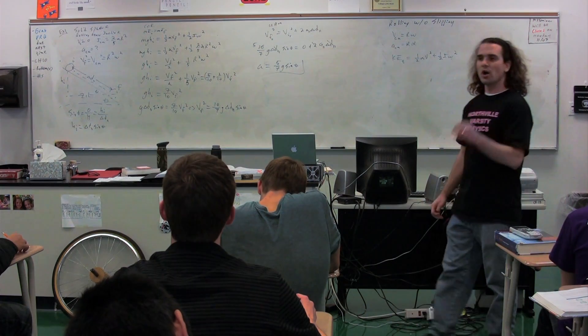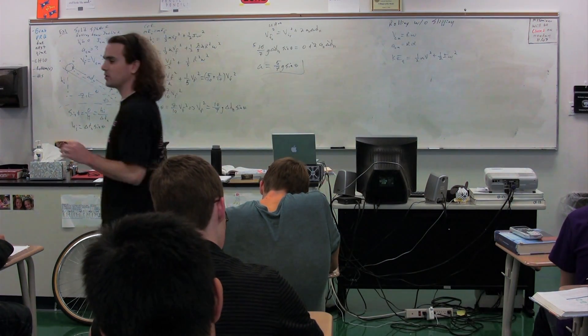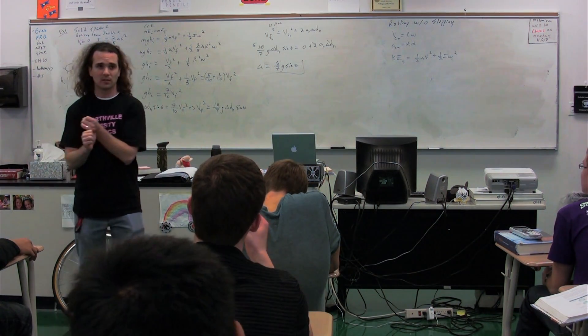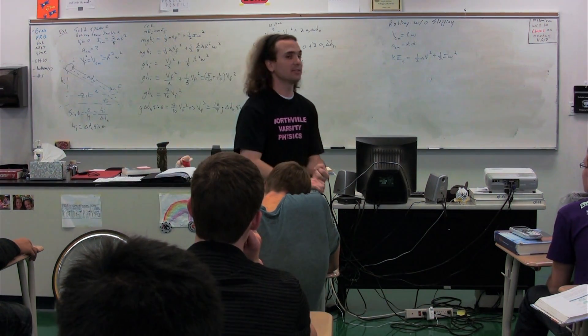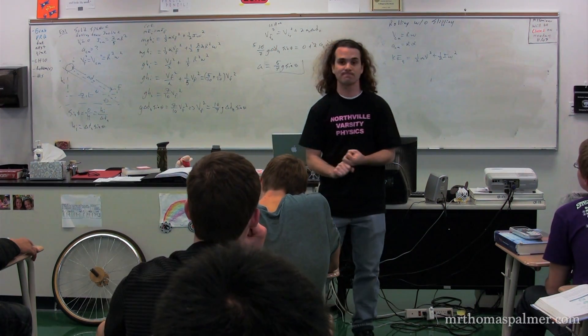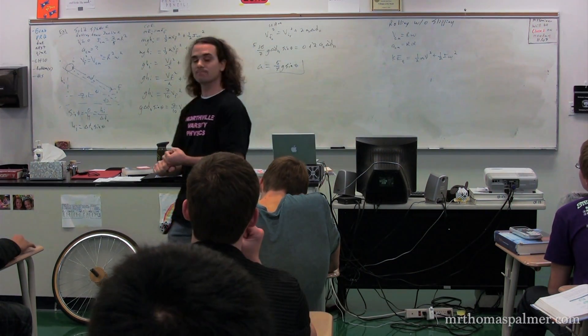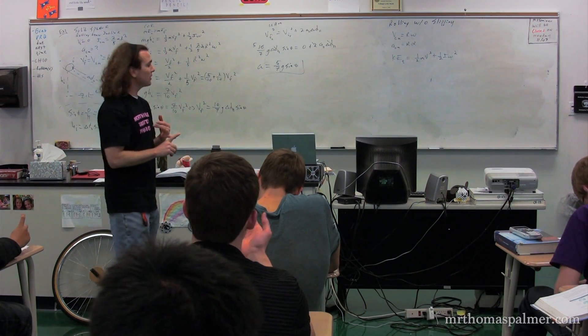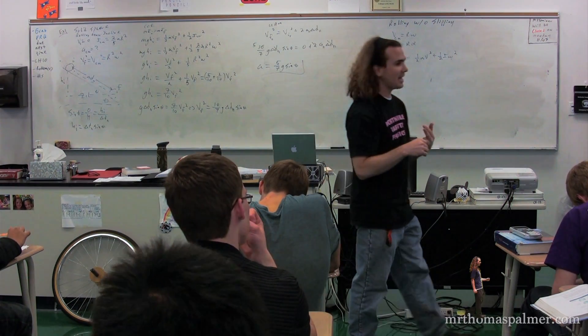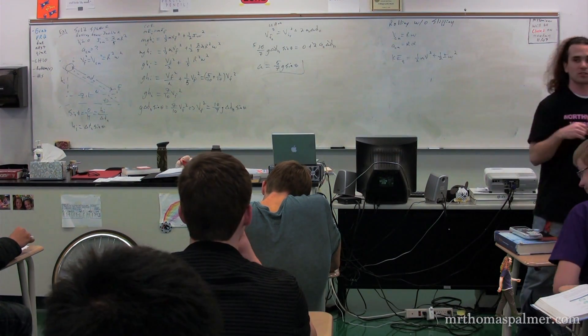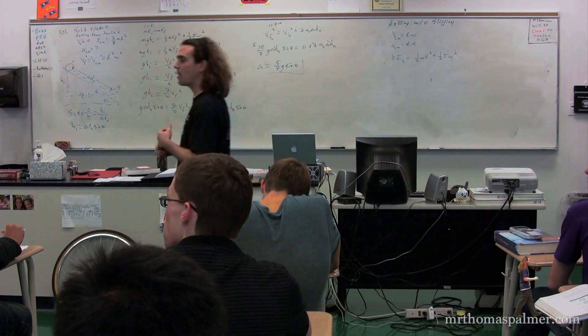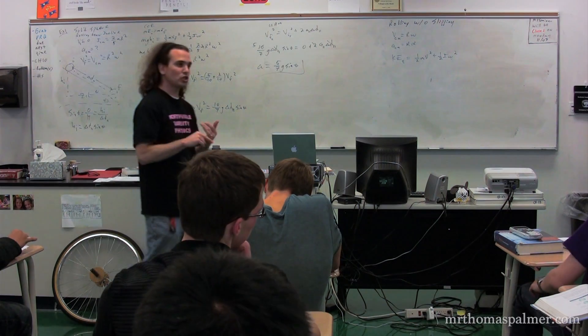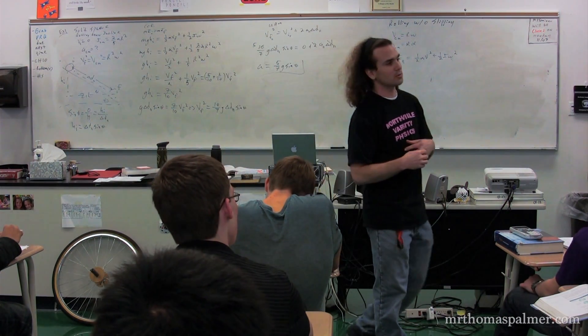So notice the acceleration of this object down the incline is only dependent on the angle, the planet you're on, and the moment of inertia, the shape of the object. Notice, it only has to do with the shape of the object, not the actual values for mass and radius, but just the shape of the object, because the two-fifths mR squared determined what fraction we got. So notice that it's only the shape, the angle, and the planet that you're on that determined this acceleration.